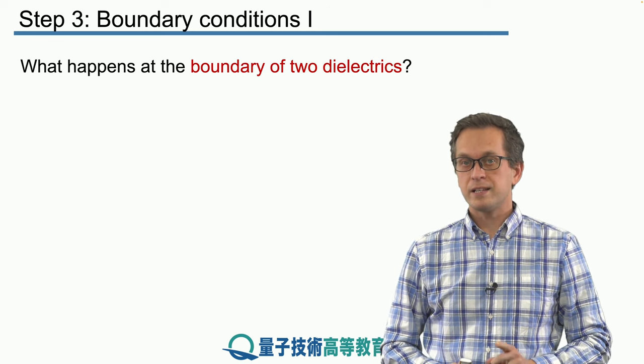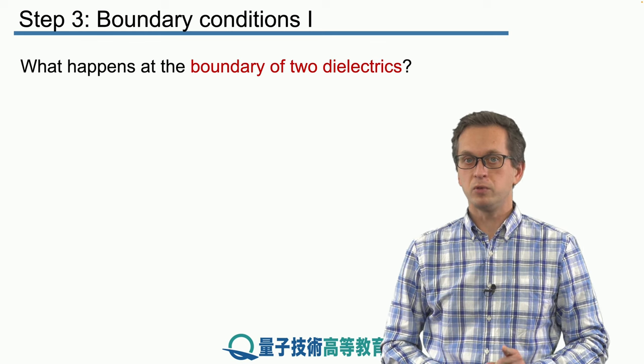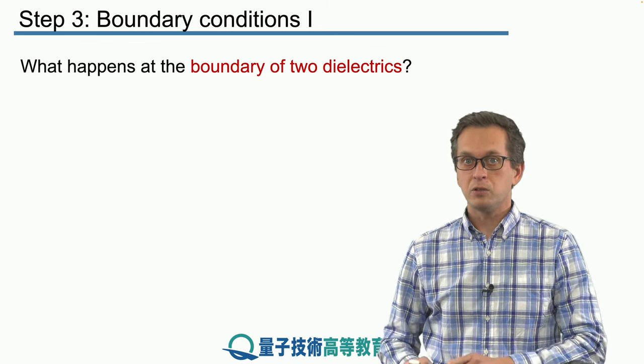In particular, we want to know exactly what happens to the electric field component and the magnetic field component of light radiation as it travels from one dielectric into a different one.